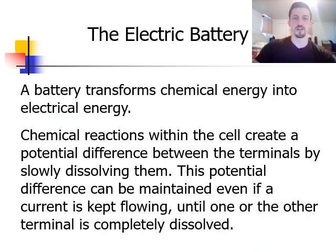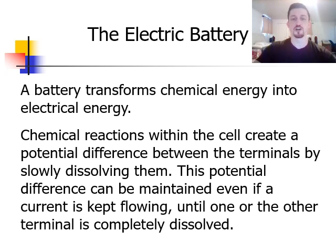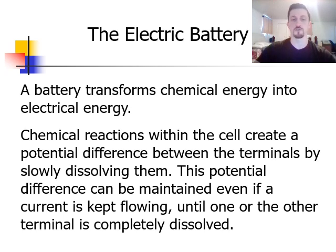So the first thing we had talked about was the electric battery. What a battery does is it transforms chemical energy into electrical energy. Basically, chemical reactions going on within the battery cause one terminal to be positively charged and the other to be negatively charged. So this creates a potential difference between the two terminals. And then this potential difference is maintained even if a current is flowing, until one or the other terminal is completely dissolved. So basically, as long as this chemical reaction is happening, this battery will create this same potential difference.